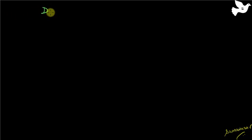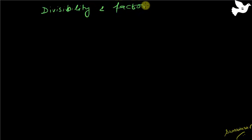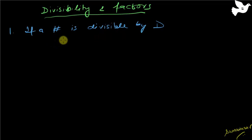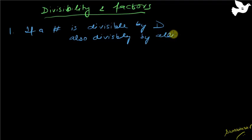Now, let's move on to another concept: divisibility and factors. The first thing you need to know is that if a number is divisible by any number D, that number is also divisible by all of D's factors.